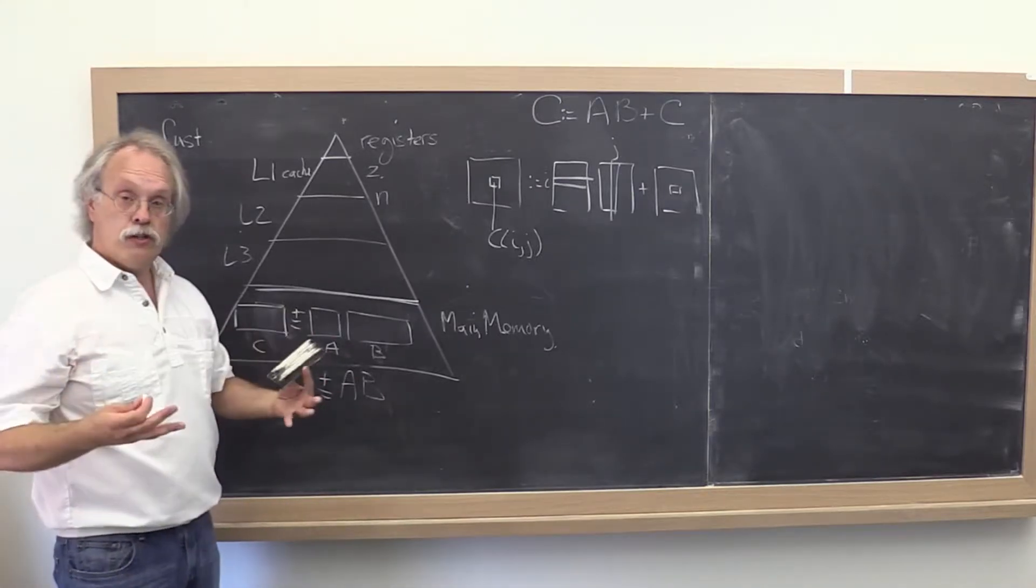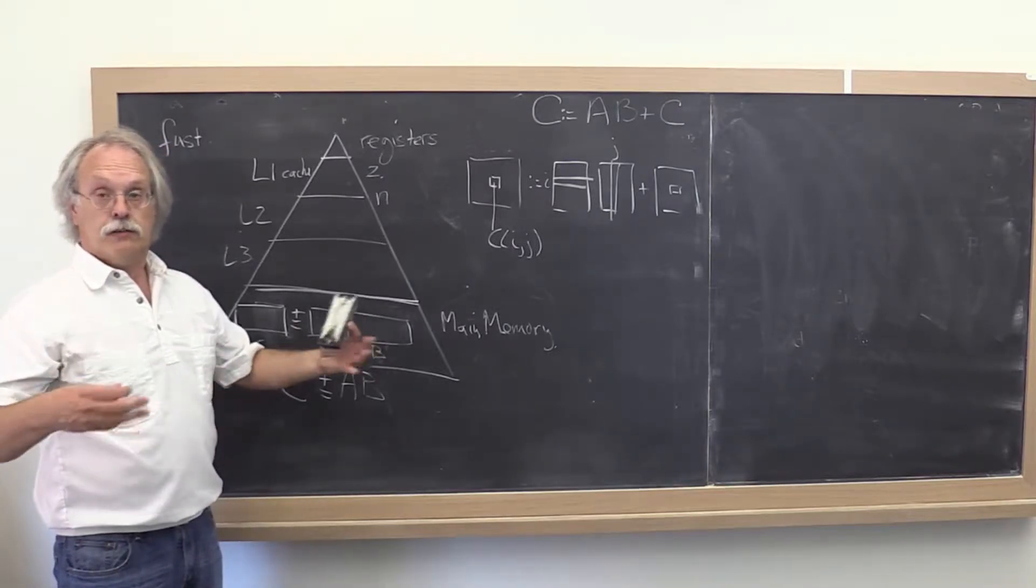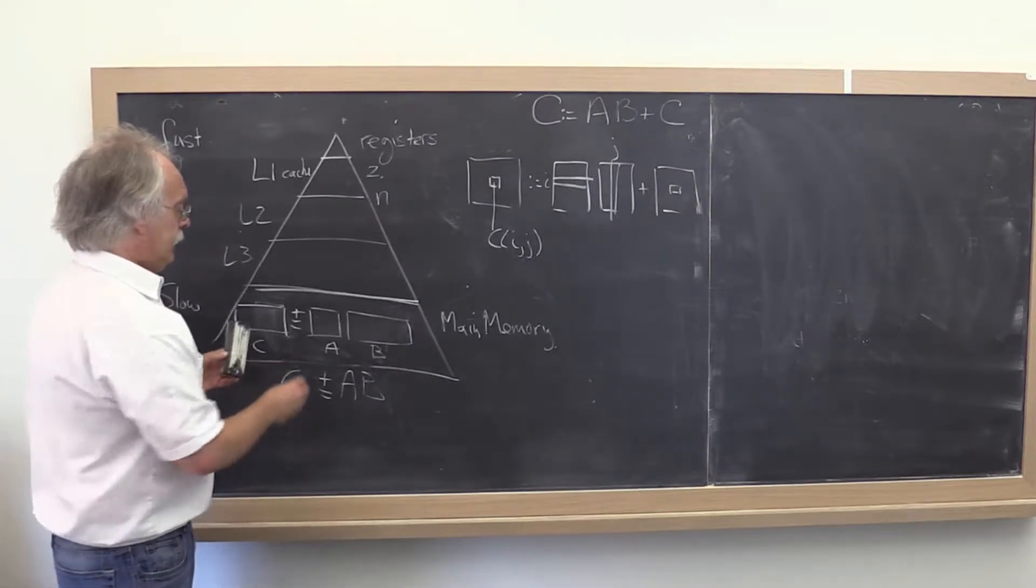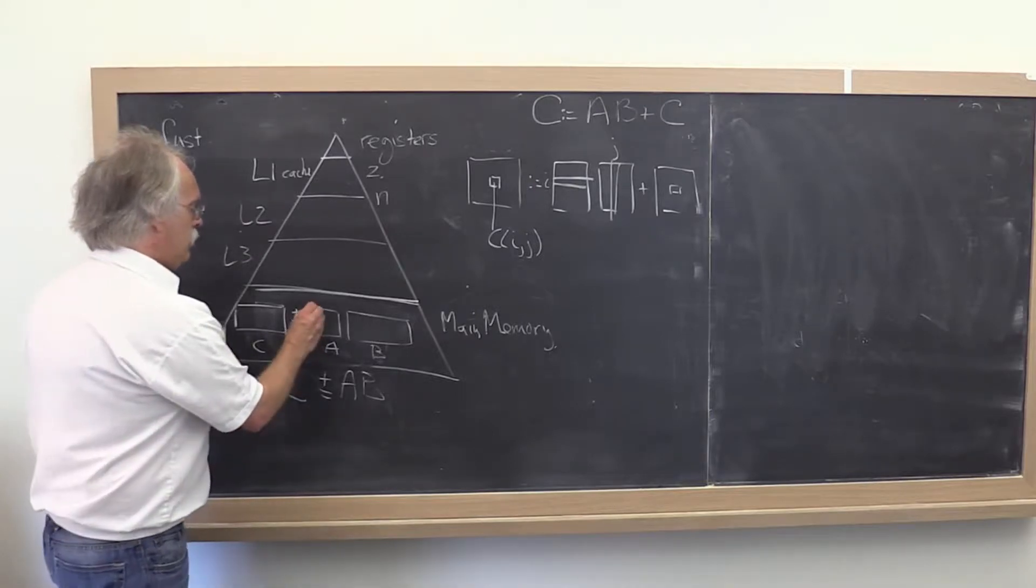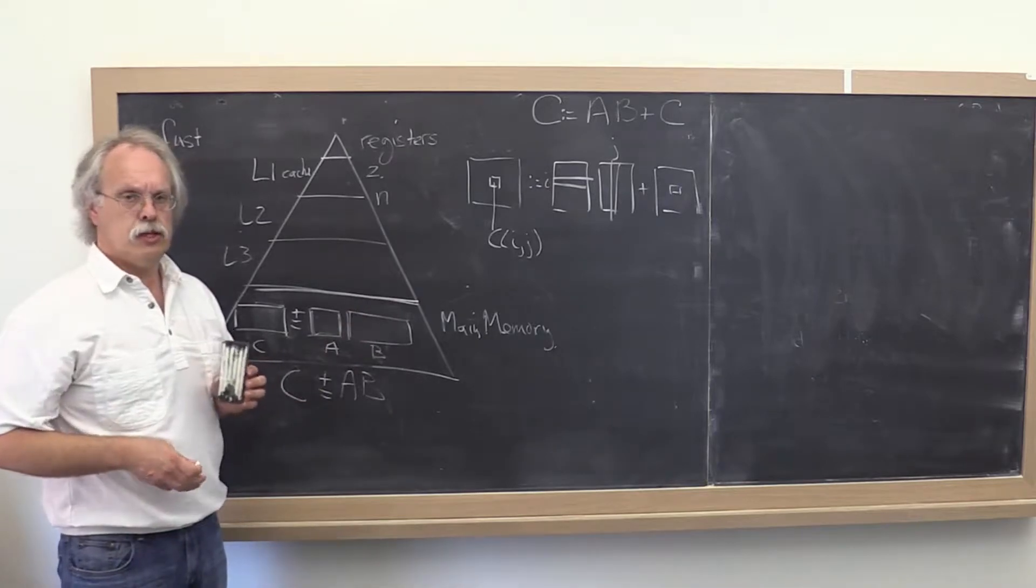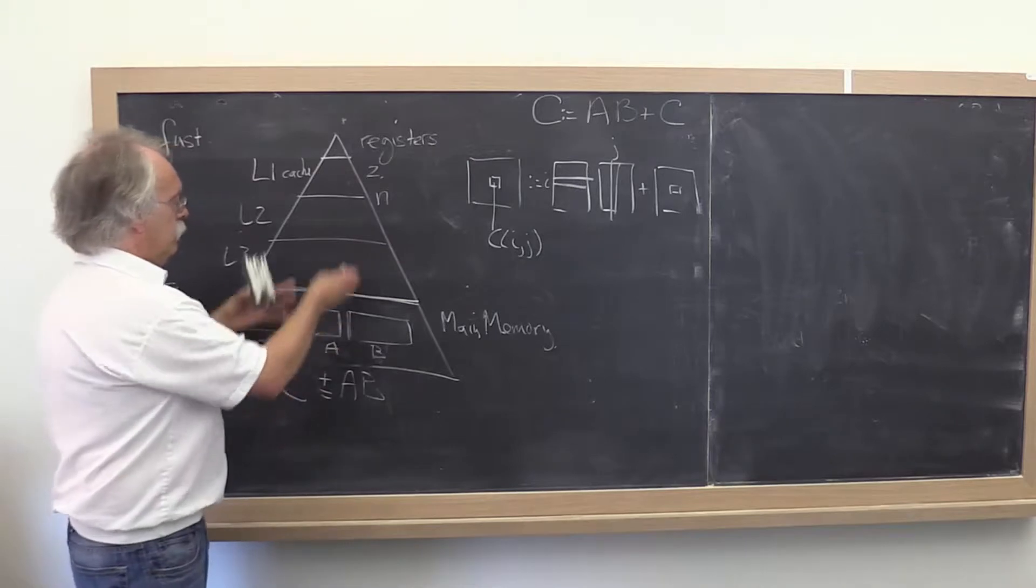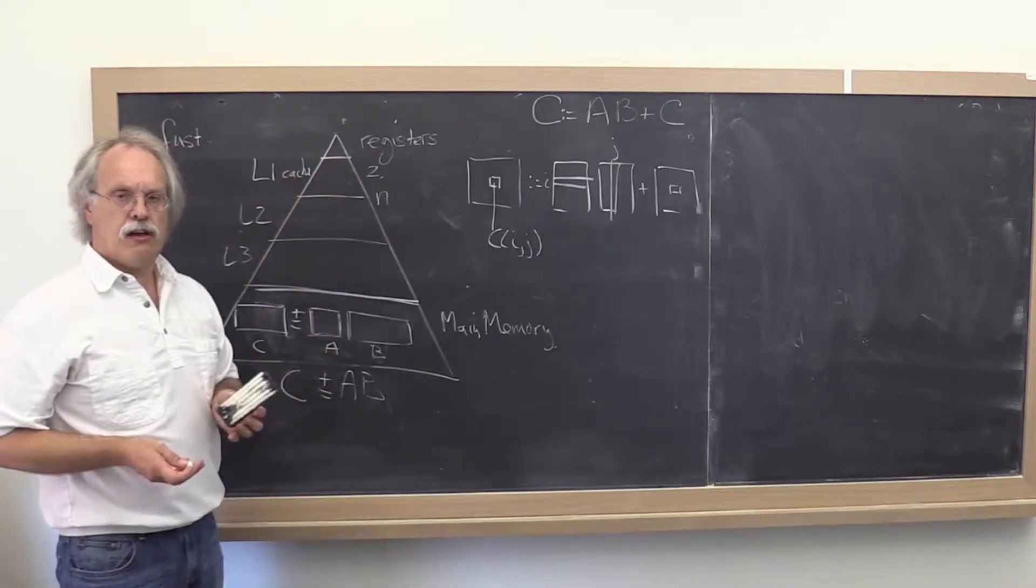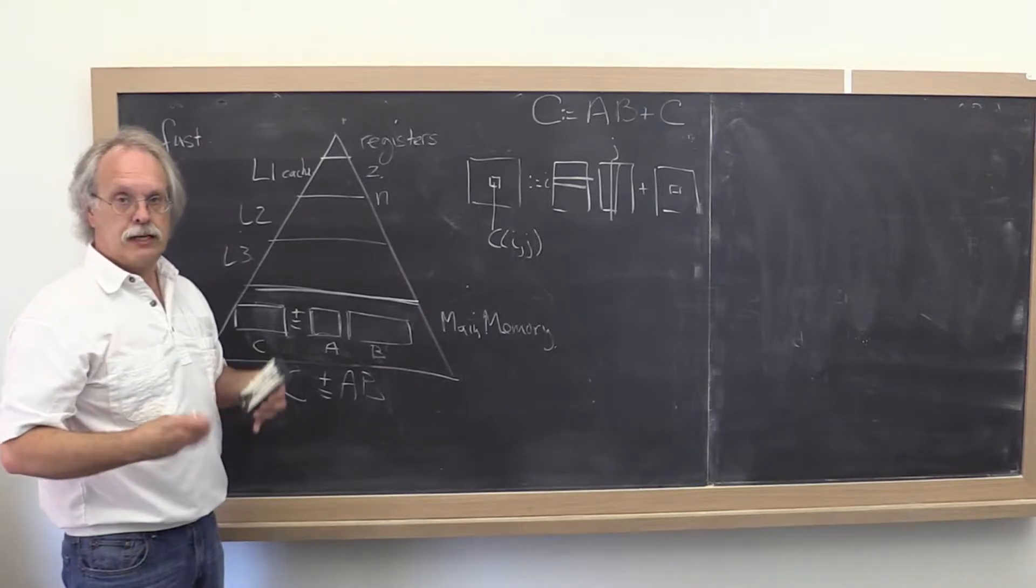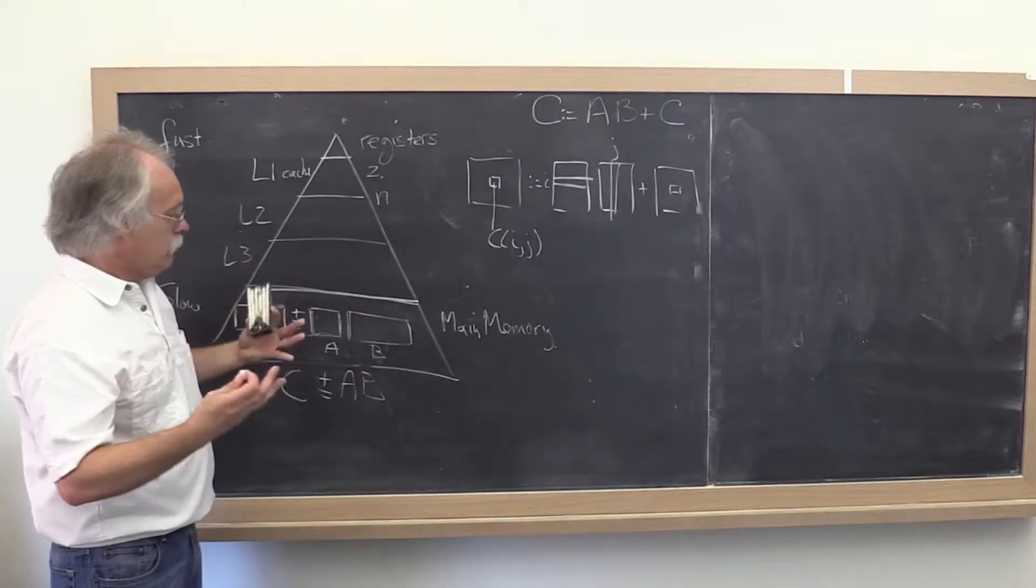So what do you do? Well, you've learned that a matrix-matrix multiply can be broken down in terms of smaller operations. You could say, let's just do it as a sequence of matrix-vector multiplies. But if the matrix is too large to fit in the L1 cache, then you're still going to have to do a lot of data movements. That's what led us to blocking.